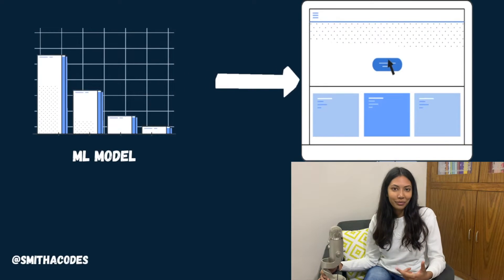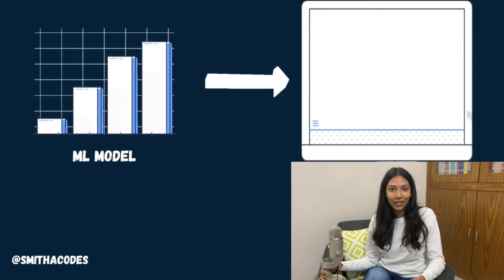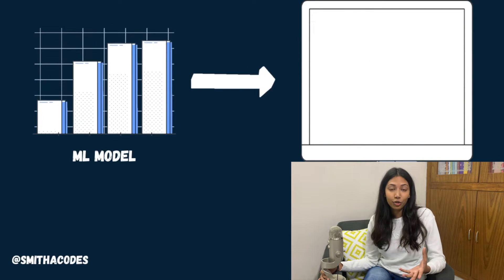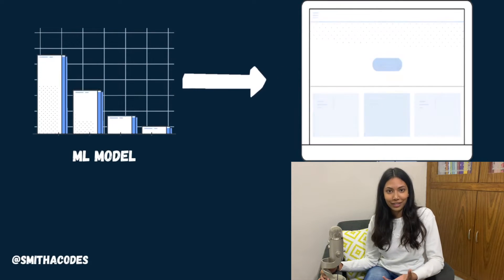I'm going to break this video into what's going to come easy for you and what areas you might need to work on a little bit more. As a software developer coming into machine learning, you already have a ton of advantages you can capitalize on. Obviously knowing how to code is a huge advantage, and knowing Python is a definite added plus. But I truly believe the biggest advantage you have is the ability to present your machine learning models in really meaningful ways to your audience.